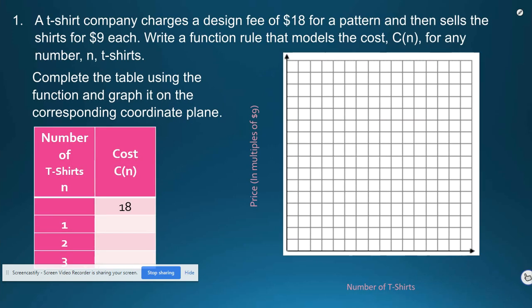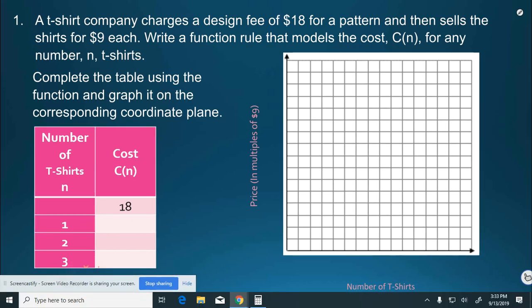Another word problem that we're going to be working with: A t-shirt company charges a design fee of $18 for a pattern and then sells the shirt for $9 each. Write a function rule that models the cost, C(n), for any number of n t-shirts.